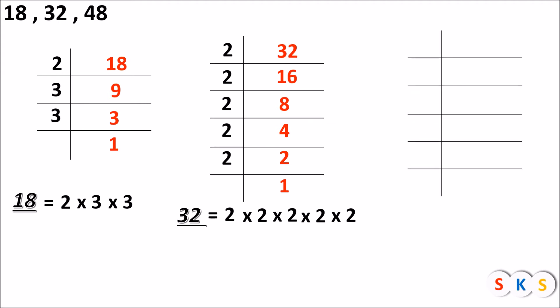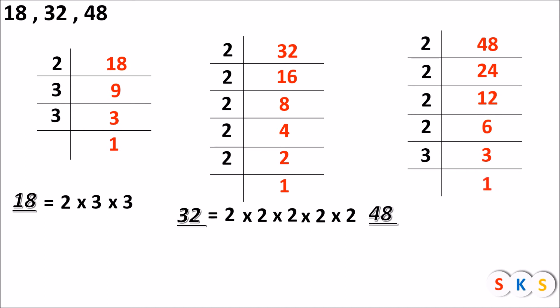Now, we will find the prime factor of the next number. Next number is 48 and 48 is divisible by 2 and 2 is prime, so we will divide it by 2 and we will get 24. 24 is divisible by 2 — 2 12s are 24. We will divide 12 by 2 — 2 6s are 12. We will divide 6 by 2 — 2 3s are 6. We will divide 3 by 3 and we will get 1. Therefore, the prime factor of 48 is 2 into 2 into 2 into 2 into 3.